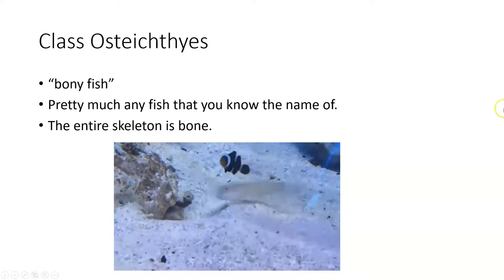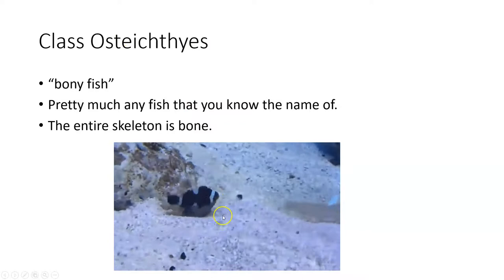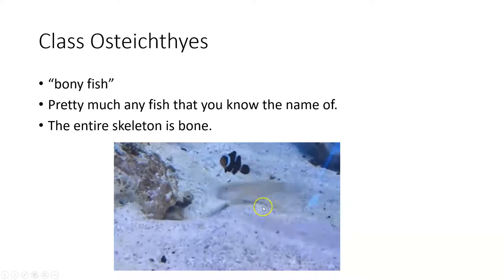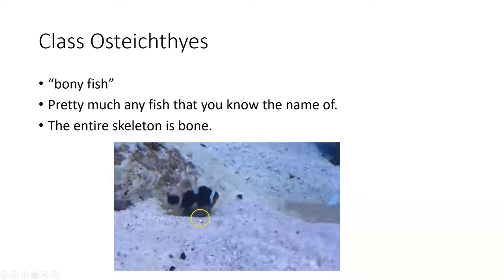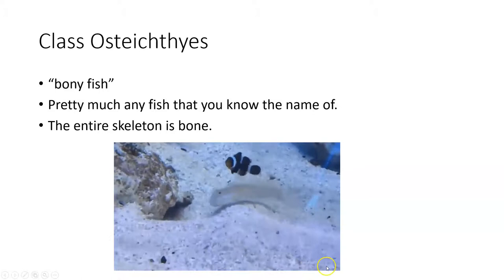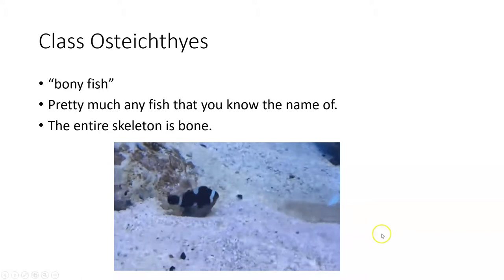Osteichthyes means 'bony fish' — every fish you know the name of goes here: Nemo from Finding Nemo, gobies, and so on. Gobies are territorial; this gif shows two gobies spitting sand into each other's territory like a sand-spitting war.